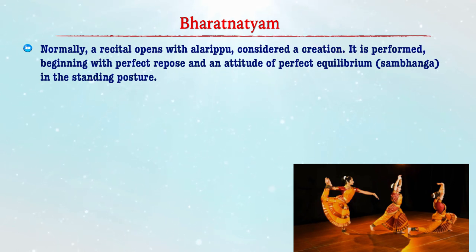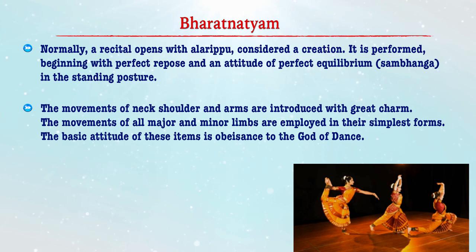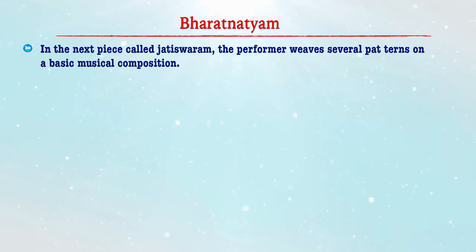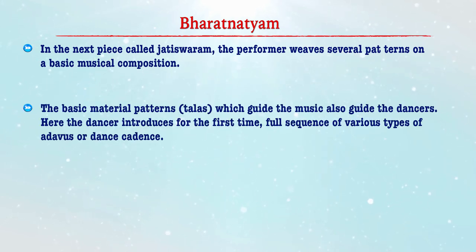Now let us discuss the important features of Bharatnatyam. A recital opens with an Alarippu, considered a creation. It is performed in the beginning with perfect repose and an attitude of perfect equilibrium — known as samapadam — in the standing posture. The movements of neck, shoulder and arm are introduced with great charm. The movements of all major and minor limbs are employed in the simplest form, and the basic attitude is submission to the god of dance. The next piece is called Jatiswaram, where the performer weaves several turns on the basic musical composition.